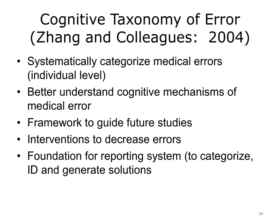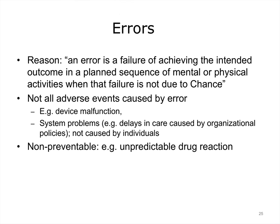Zhang and colleagues created a taxonomy to classify medical errors at the individual level. This will allow us to better understand cognitive mechanisms of error, provide a framework to guide future studies, and possibly help create interventions to decrease errors. One technique advocated for increasing safety is to have a national reporting system, and taxonomy of errors can assist in classifying them appropriately. Reason defines an error as the failure of achieving the intended outcome in a planned sequence of mental or physical activities when that failure is not due to chance.